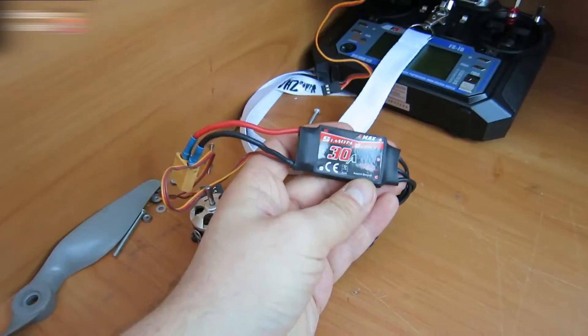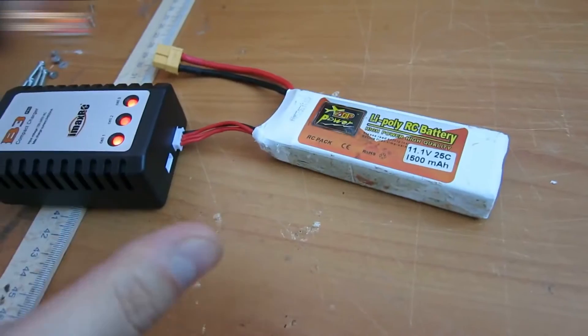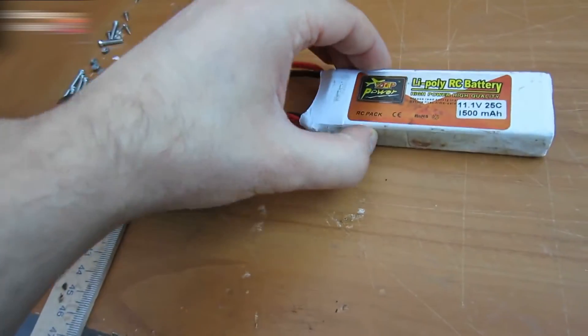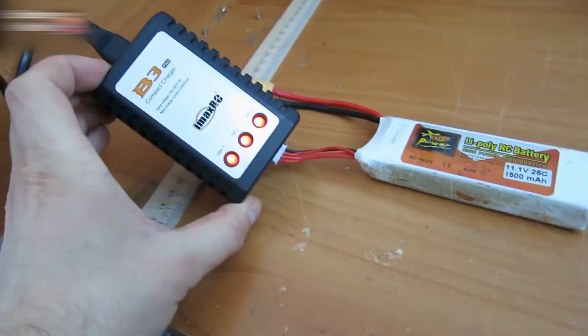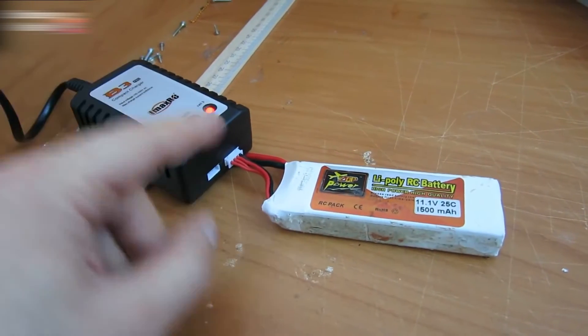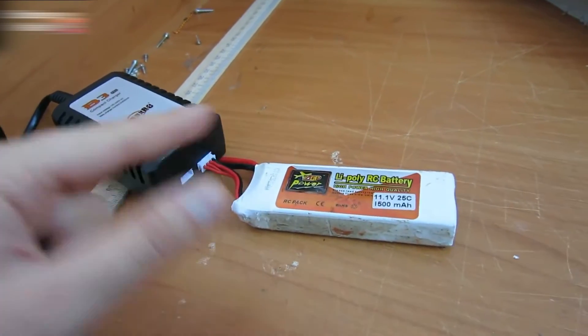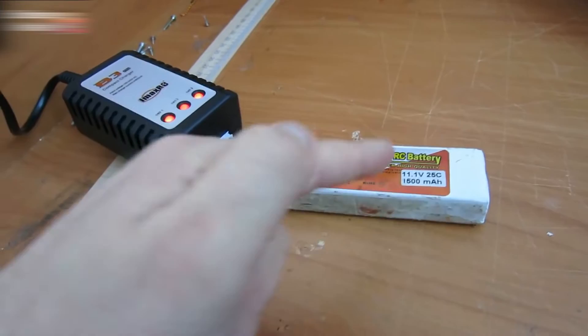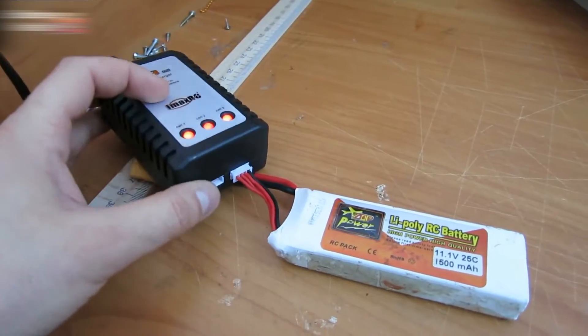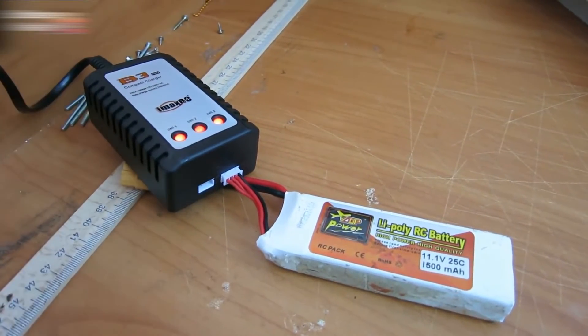The links for all the equipment used are in the video description section. People ask what do you use to charge this battery? I use this battery charger. It can charge the 11.1V 3S-type batteries and 7.4V 2S batteries. The link for the charger is also in the video description section.